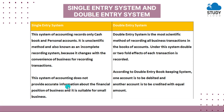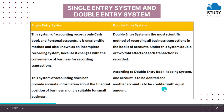Mostly small businesses use the single entry system. On the other hand, in the double entry system, one account is to be debited and another is to be credited with an equal amount. Because there are two effects, we can accordingly draw a conclusion about the financial position of the business.